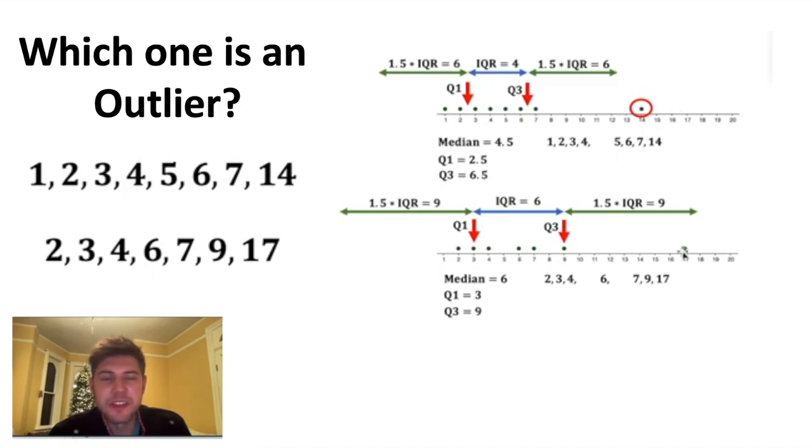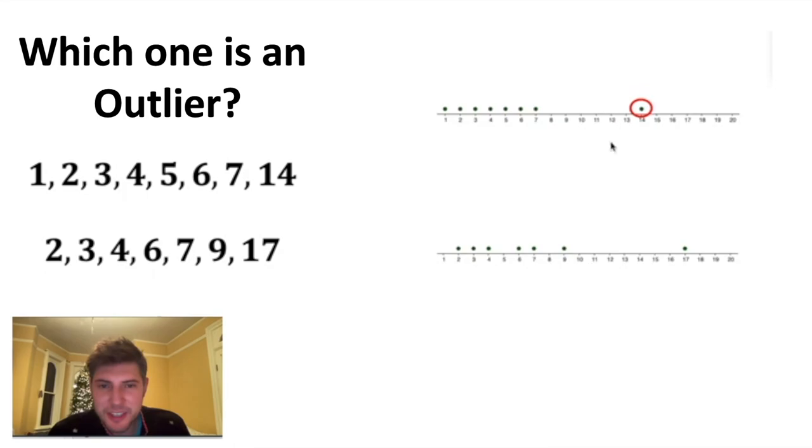This 14 is an outlier, but this 17 is not. If we get rid of all this stuff and just look at it visually, this is considered an outlier. This is not. Does that feel weird?